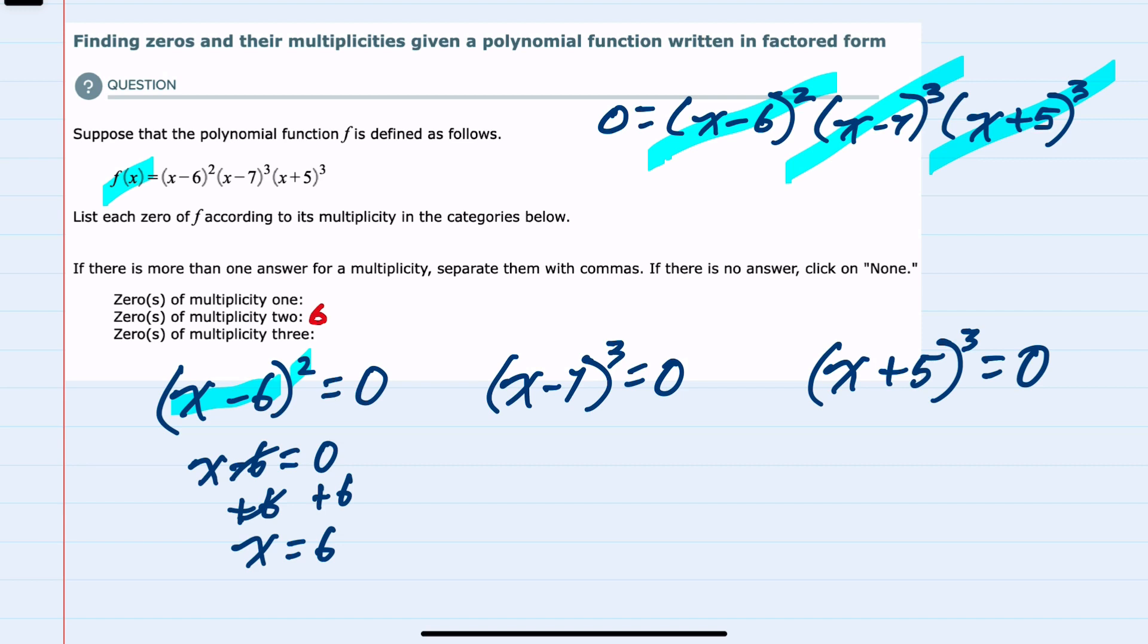Moving to the next expression, we have x minus 7 cubed equals zero. If you cube a number and the result is zero, that again means that what's inside must be zero. We can solve here for x by adding the 7, so we have x equals 7. But this solution would occur three times, so our 7 has a multiplicity of 3.